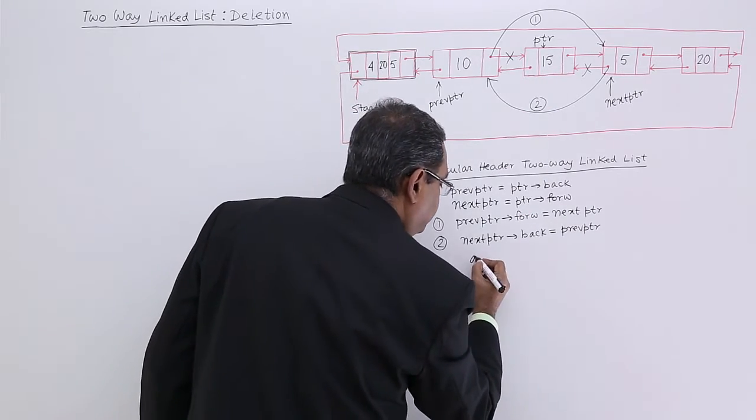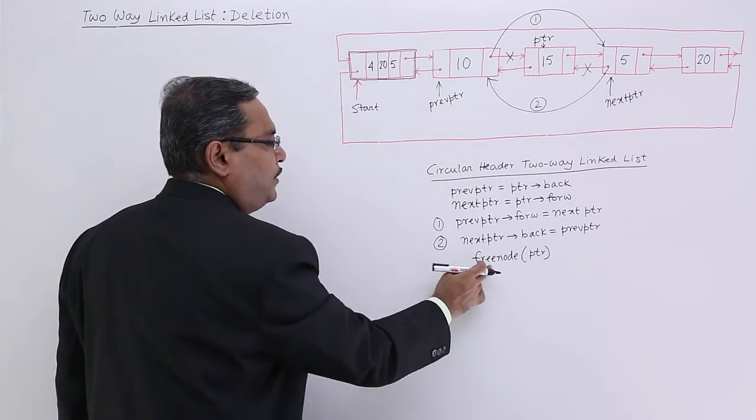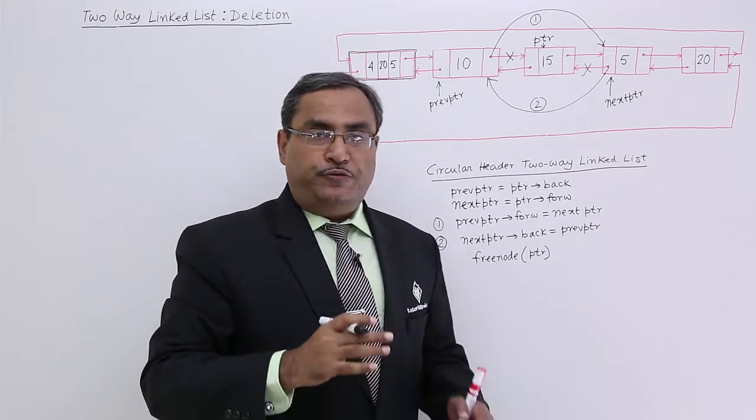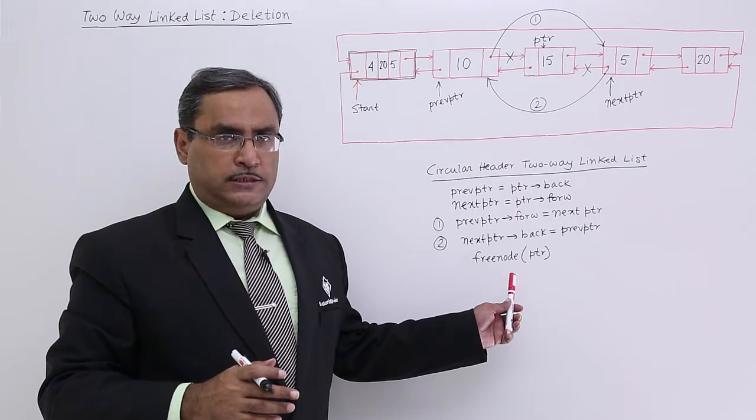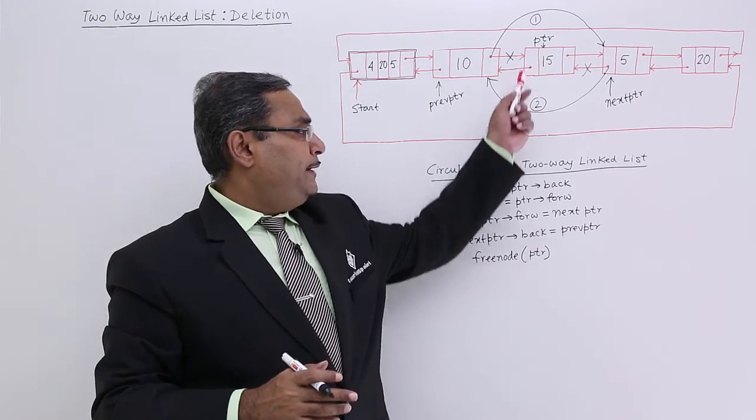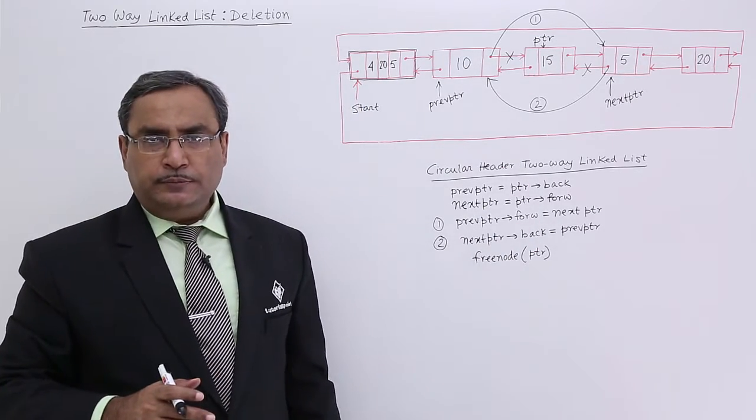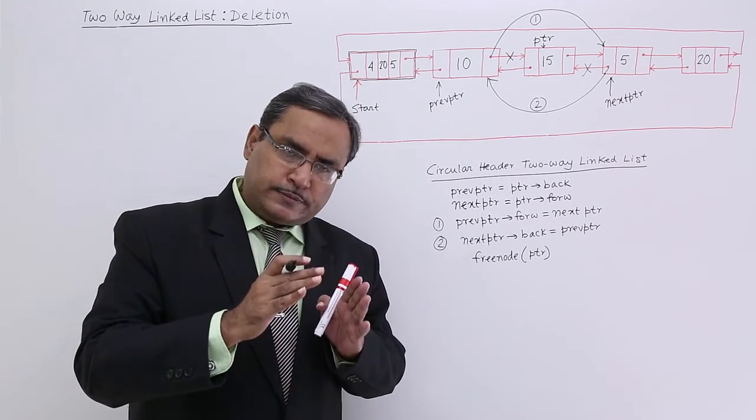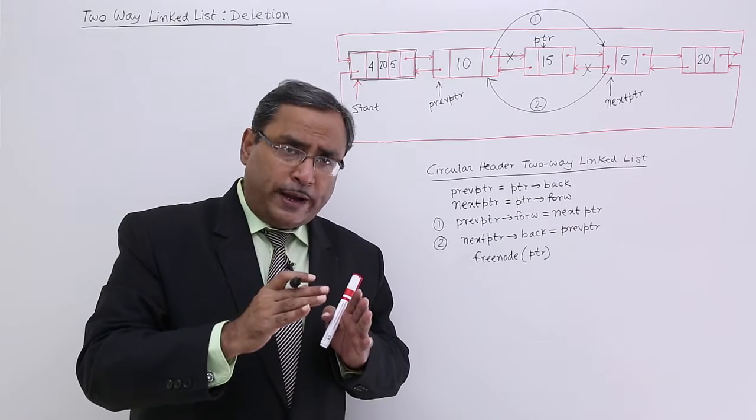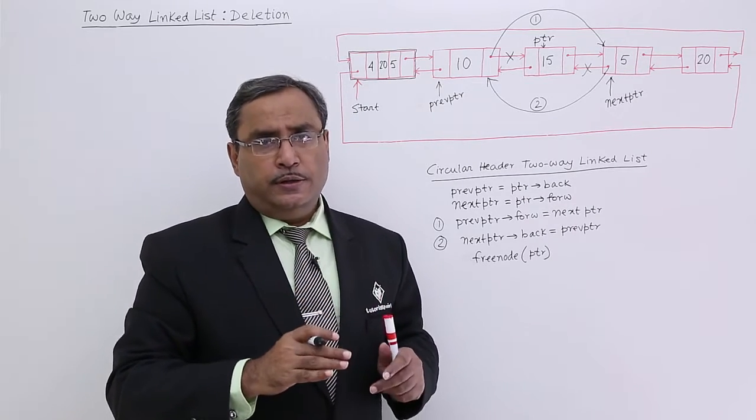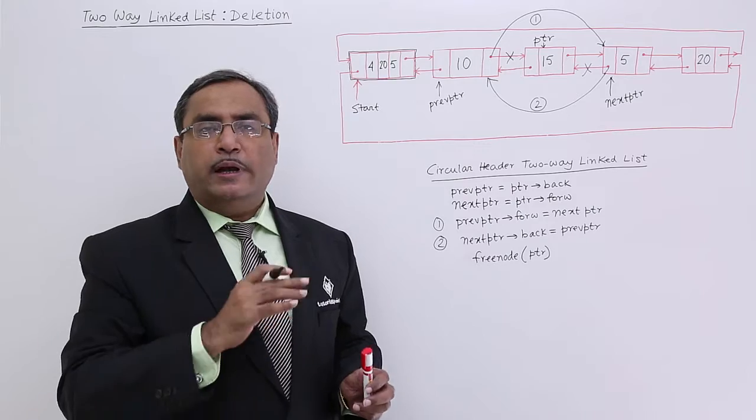Write this one. Freenode PTR. Freenode PTR, Freenode is one of the functions. This function will take this PTR as input parameter and it will release the space which was occupied for this variable PTR for this node PTR pointed by the variable PTR.